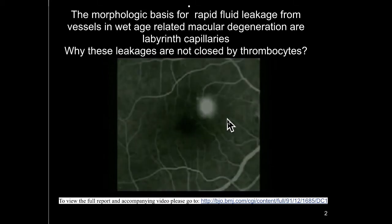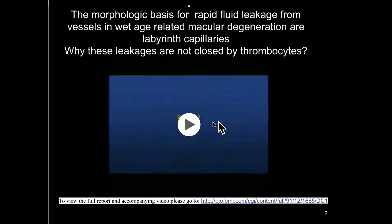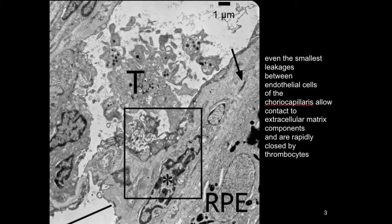The question is why these leakages are not closed by thrombocytes. Normally, leakages between endothelial cells of the choriocapillaries that allow contact to the extracellular matrix are rapidly closed by thrombocytes. As you can see, two endothelial cells of the choriocapillaries with a very small gap directly activated these thrombocytes that will close this gap very quickly.